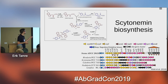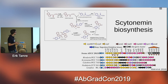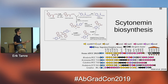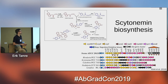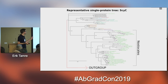Very briefly, scytonemin is synthesized from relatively basic organic compounds — tryptophan and prephenate are some precursors — and there is a set of proteins called PsiA through PsiF that do most of the synthesis. I'll also briefly mention some other proteins that mainly make the precursors for this synthesis. These relevant genes are collected into one cluster — one operon — in the genomes of organisms that have this pathway. We'll be talking most about PsiA through PsiF. This is a phylogenetic tree of one of them, PsiC, across different organisms.